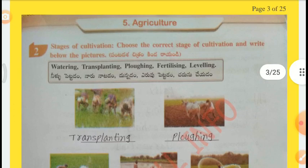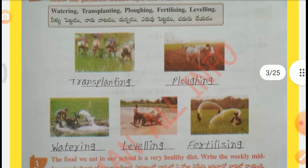Question No. 2 — Stages of Cultivation. Choose the correct stage of cultivation and write below the pictures. Options: Watering, Transplanting, Plowing, Fertilizing, Leveling. 1st one is Transplanting, 2nd one is Plowing, 3rd one is Watering, 4th one is Leveling, 5th one is Fertilizing.